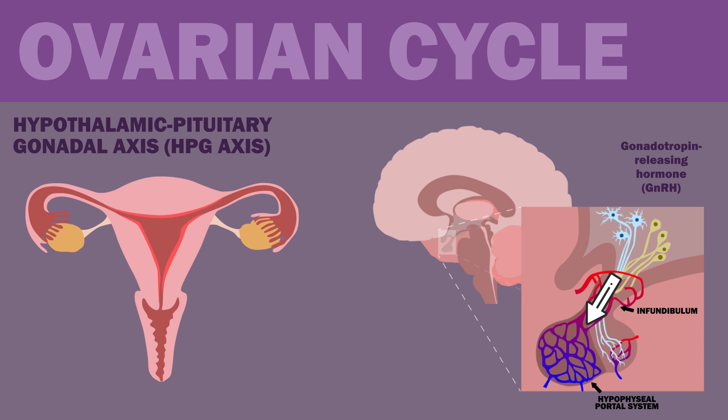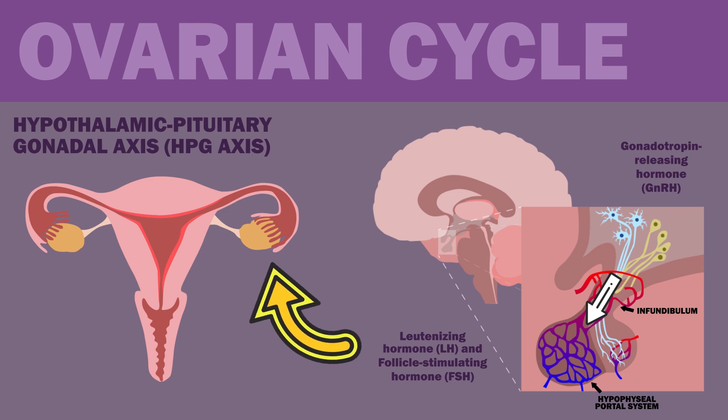The pattern of GnRH pulses stimulates release of the gonadotropins luteinizing hormone, or LH, and follicle-stimulating hormone, or FSH, from endocrine cells of the anterior pituitary. LH and FSH travel through the bloodstream and reach the gonads — the ovaries in females.